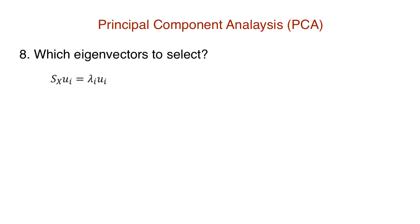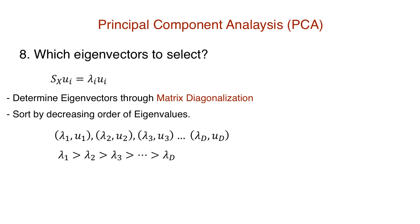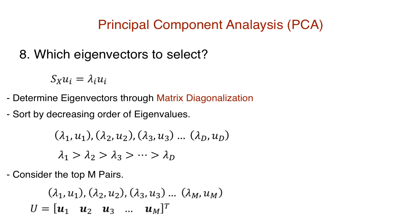Now look back at the equation that we obtained during the maximization of the retained variance. For a covariance matrix S x of shape d cross d, we first determine the d eigenvector and eigenvalue pairs. How? Matrix diagonalization. Now sort these pairs based on the eigenvalue. Since the eigenvalues are proportional to the variance retained, we only select the top m pairs with the highest eigenvalues. Why top m? Because this is the smallest set of the eigenvectors that can retain the maximum variance. Each of these eigenvectors correspond to U i. Hence the entire matrix U is actually a matrix of the top m eigenvectors of S x.